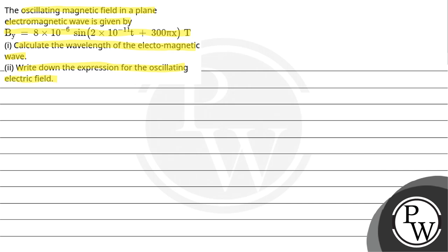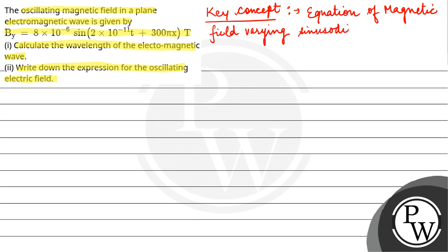The key concept is the equation of magnetic field varying sinusoidally with distance and time. That is equal to B = B0 sin(ωt + kx).